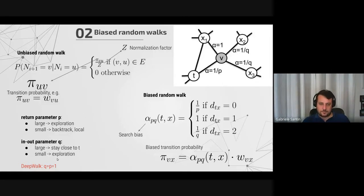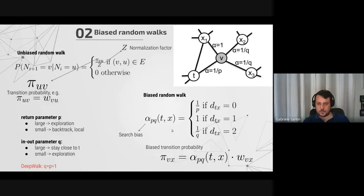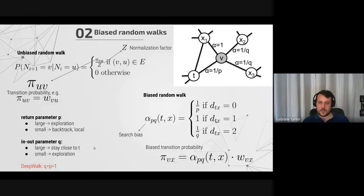If p is large it gives more probability to exploration; if small, more probability to backtracking. The opposite is true for the in-out parameter q. This is the definition for Node2Vec. DeepWalk is just given by setting p equal to q equal to one, so the search bias is constantly one and the random walks are unbiased. The default values for p and q in the implementation are both one, which means by default the implementation behaves as DeepWalk.